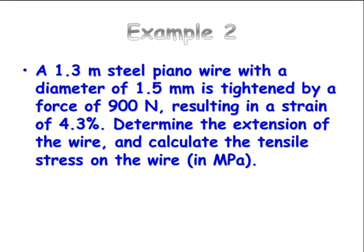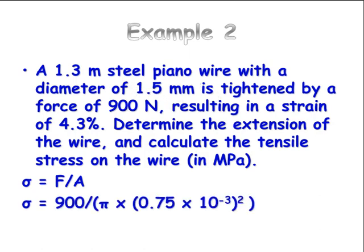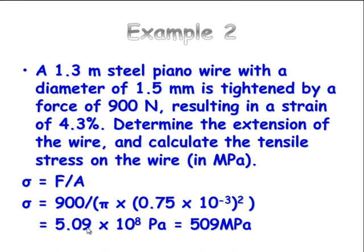Okay, now to calculate the stress. Sigma equals F over A. So we know F. We can work out what A is. So we've got 900 divided by pi times, so we've got to halve that, divide by 1,000 to put it into meters and square that. And that gives us 5.09 times 10 to the 8 pascals or 509 megapascals.